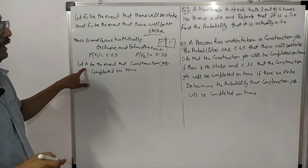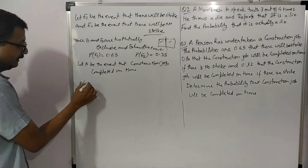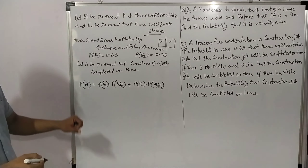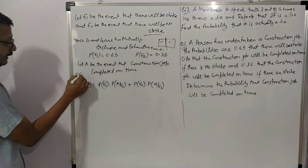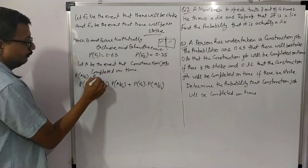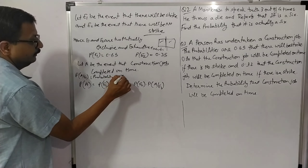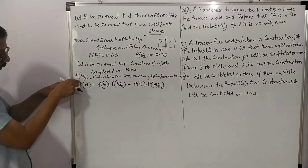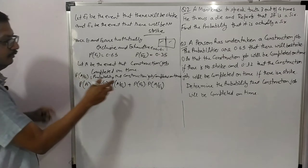P(A|E1) is the probability that the construction job is completed on time when there is a strike. P(A|E2) is the probability that the construction job is completed on time when there is no strike. We need to find the total probability P(A) using the total probability theorem.